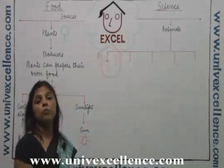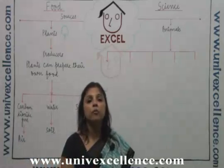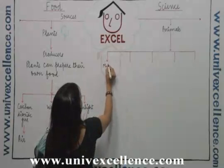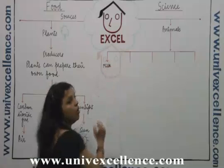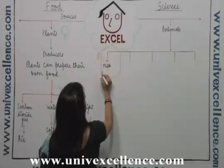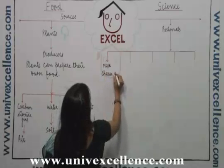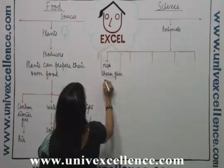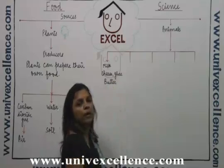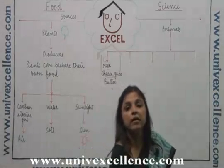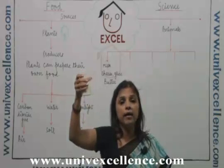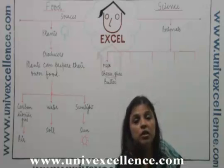The first very important and very common food which we get from animals is milk, or various milk products like cheese, ghee, butter, and so many other things you can see here. This is milk which we get from animals, and this is cheese.